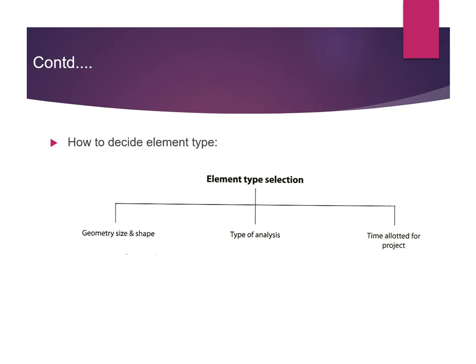FEM reduces degrees of freedom from infinite to finite through discretization — that is, meshing. How to decide element type: element type selection depends on three factors — first, geometry size and shape; second, type of analysis, such as linear, thermal, dynamic, or impact analysis; and third, and most importantly, the time allotted for the project, because increasing element numbers increases solution time.